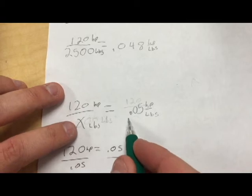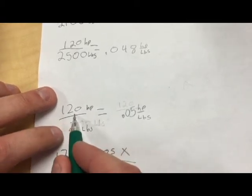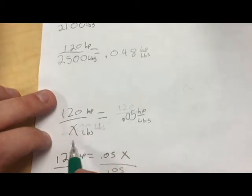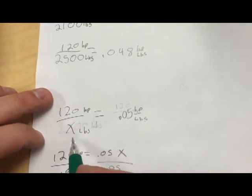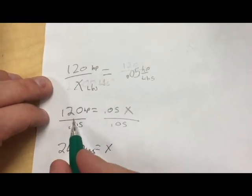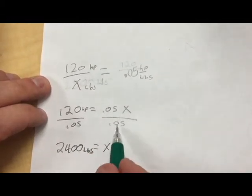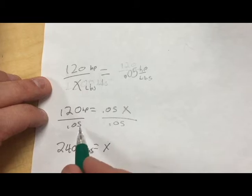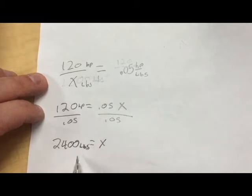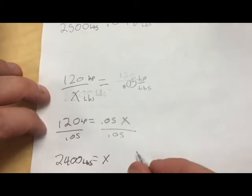I want mine to be 0.05, and I have 120 horsepower. How much weight do I need to lose? X. Let's see: 120 equals 0.05 times X. I can divide both sides by 0.05. That gives me 2,400. So I need to lose 100 pounds. I don't think I'm losing 100 pounds from here.